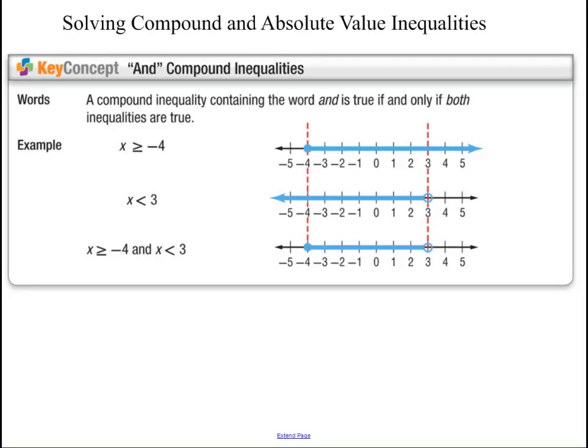Today we're going to be talking about solving compound and absolute value inequalities. A compound inequality has more than one inequality in it. An 'and' is when both of the inequalities are true.